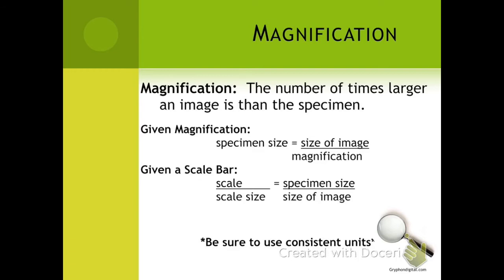When we use our compound light microscopes, the magnification of both lenses is what we're going to be looking at. The viewing lens magnifies 10 times, and then the additional lens will magnify up to 100 times. So then you take 10 times 100 to get your total magnification.